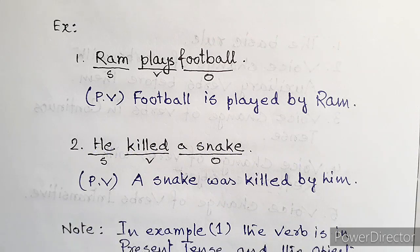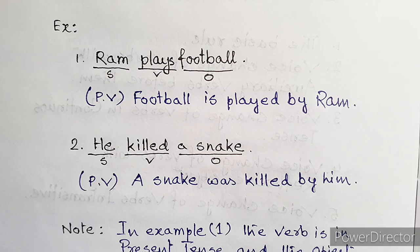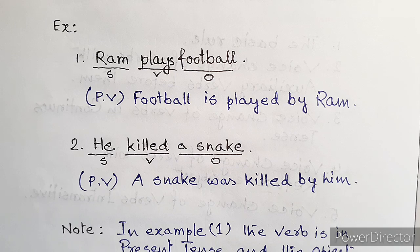In the next example, 'He killed a snake,' the verb 'killed' is in past tense, the subject is 'he,' and the object is 'a snake.' Changing the voice: first comes the object 'a snake,' then the be-verb in past tense 'was,' then the past participle 'killed,' then 'by,' and finally the subject 'him.' So: 'A snake was killed by him.'